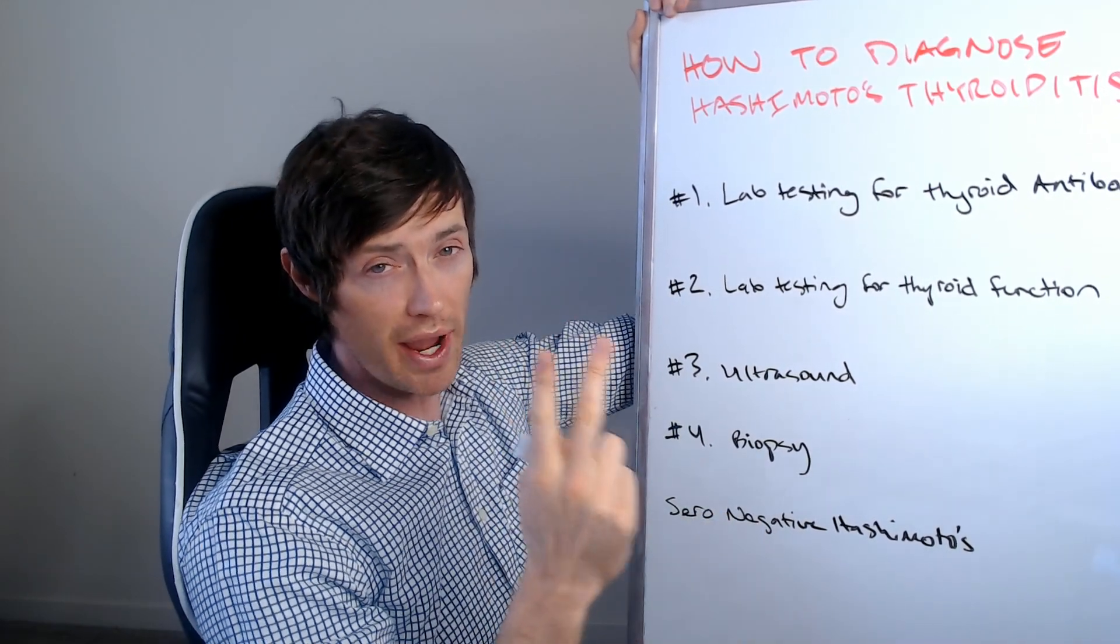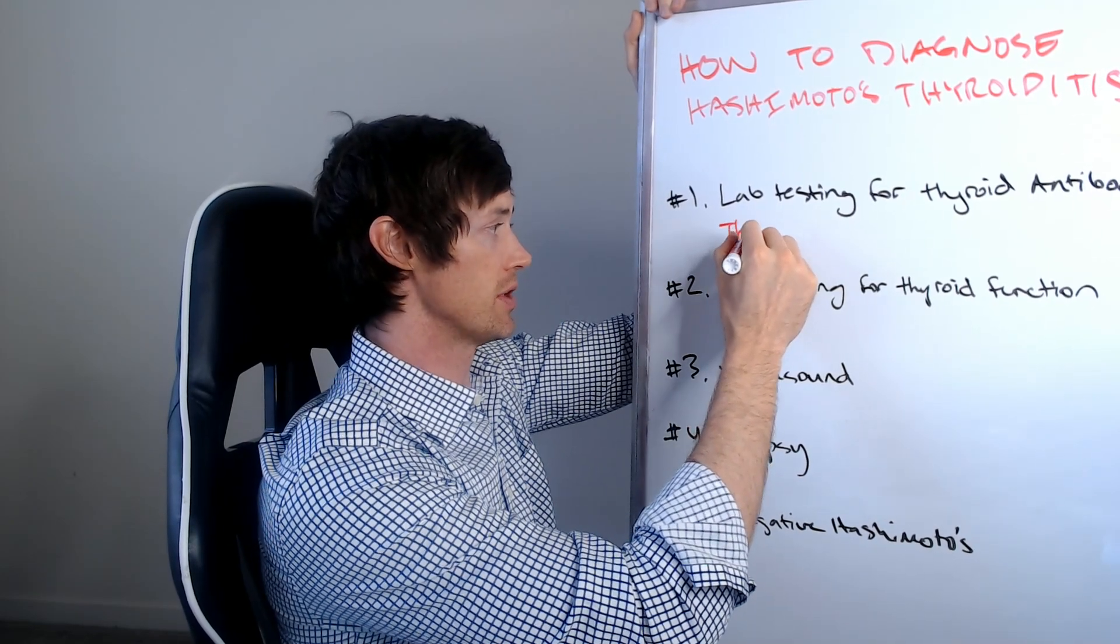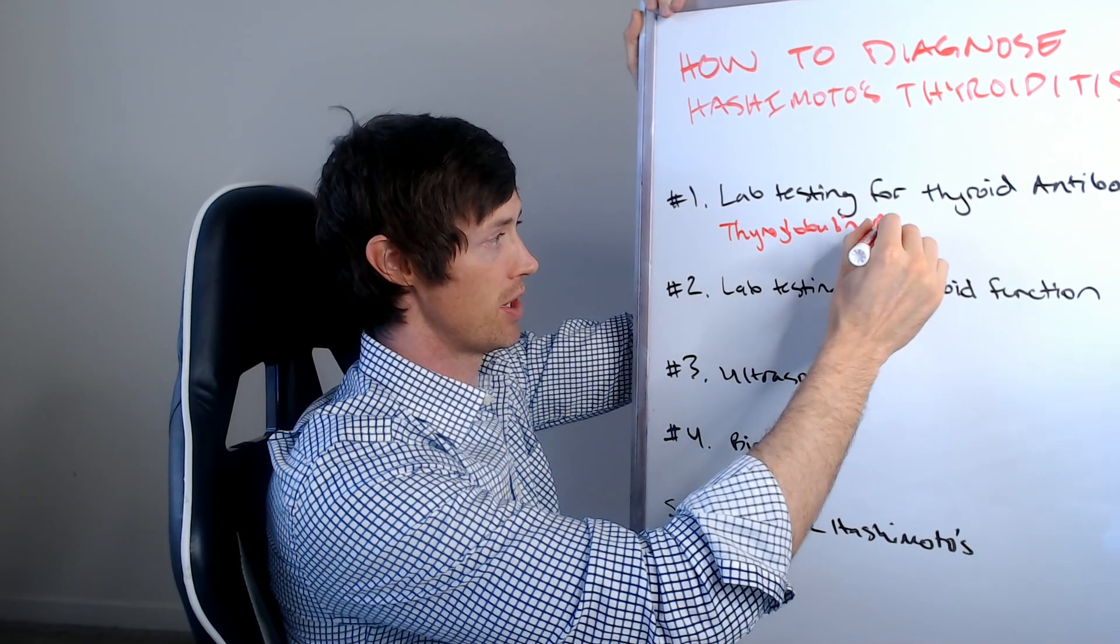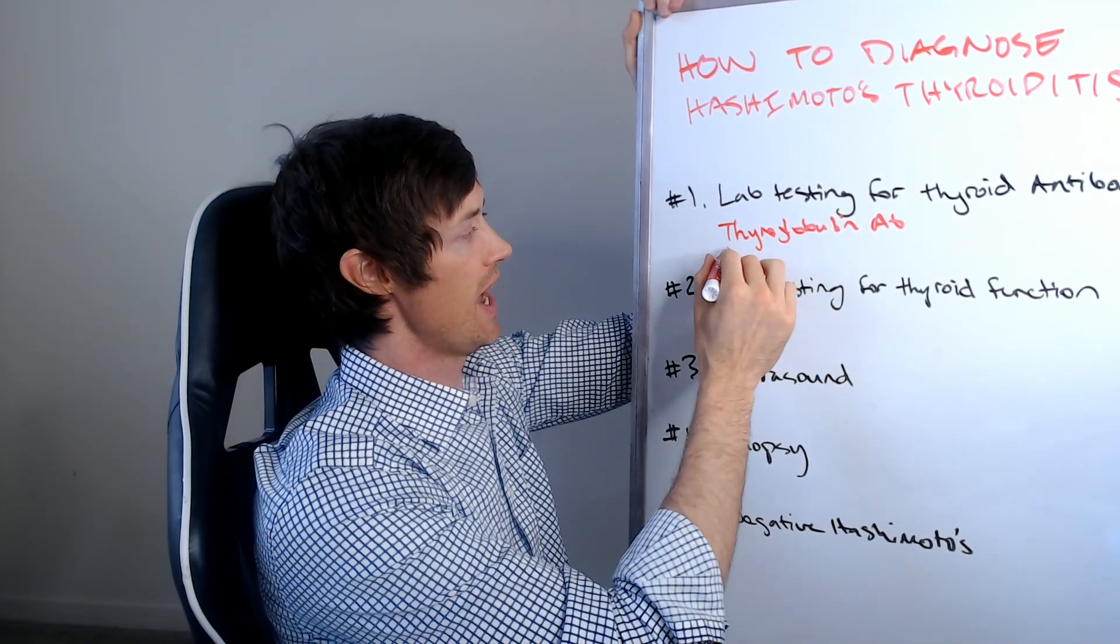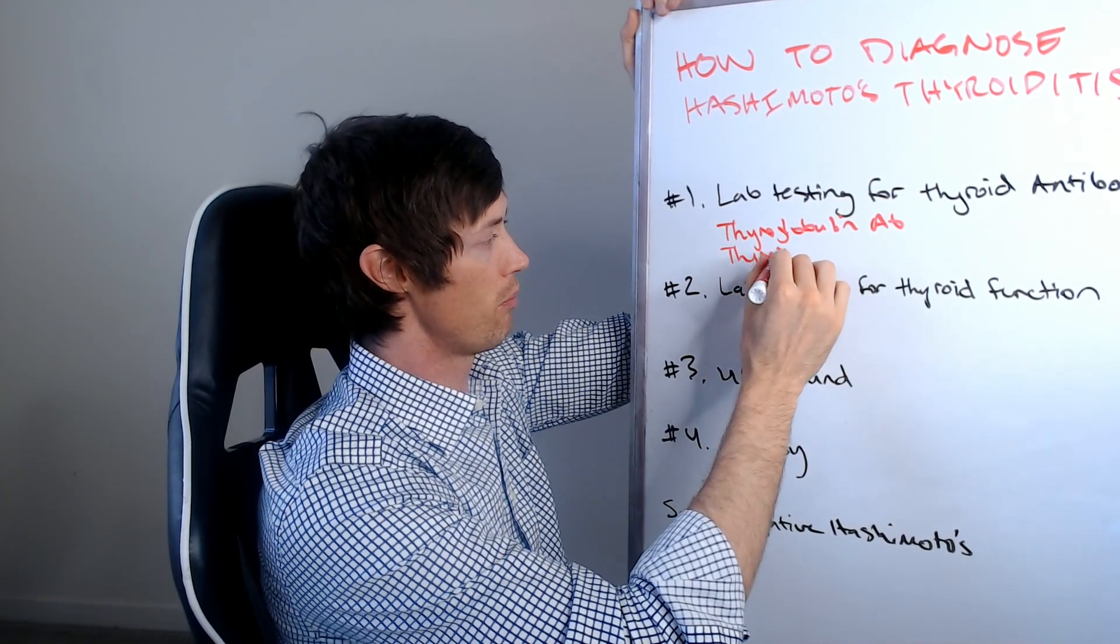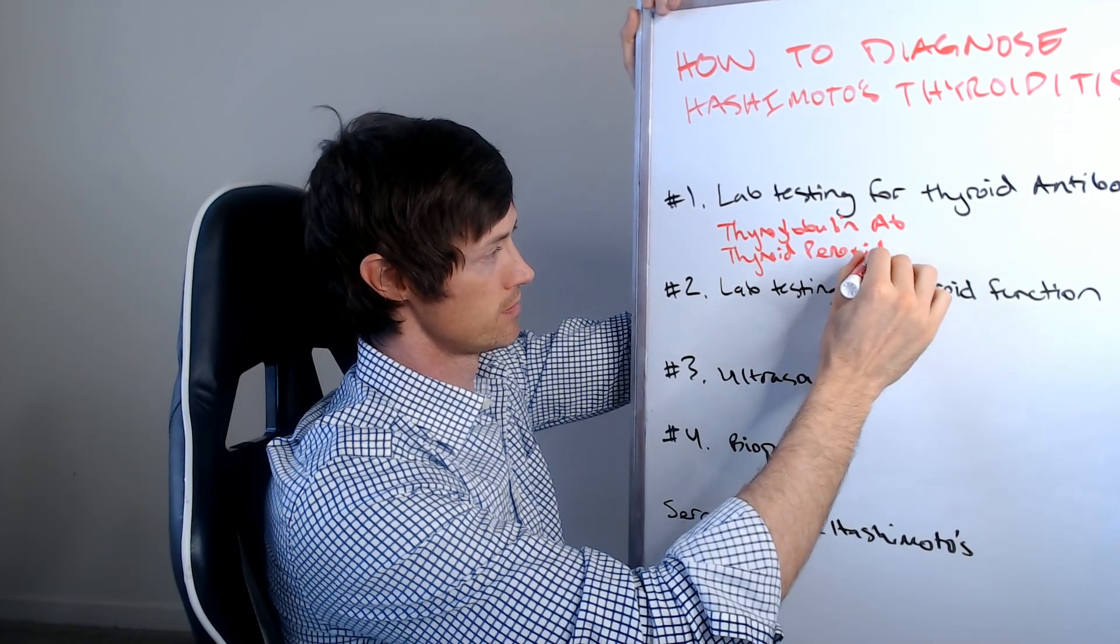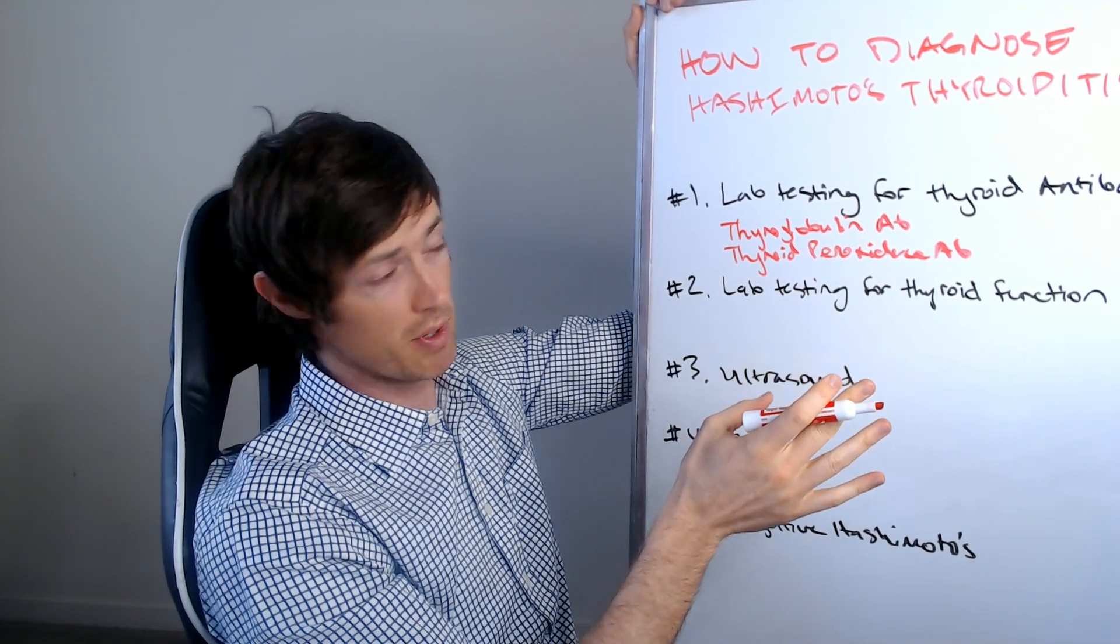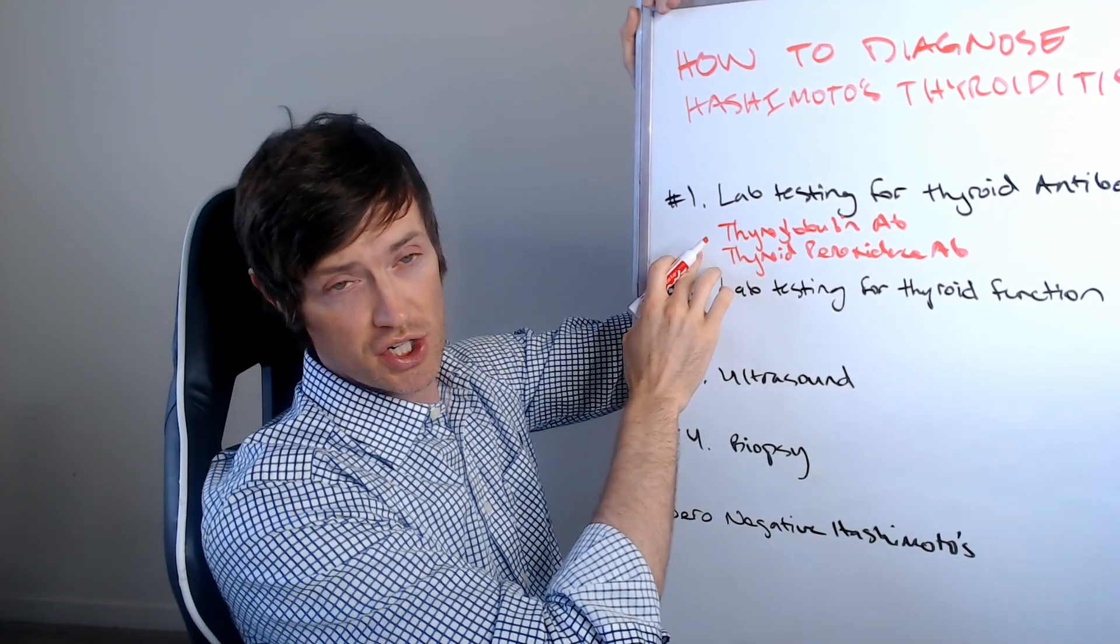Now there are two antibodies that you should be aware of. One is thyroid globulin antibody. AB is the abbreviation for that. And the other is thyroid peroxidase antibody. So there are other thyroid antibodies, by the way, but these are the two associated with Hashimoto's thyroiditis.